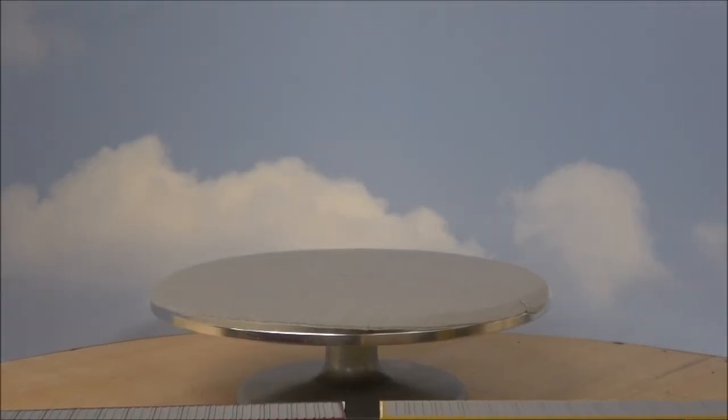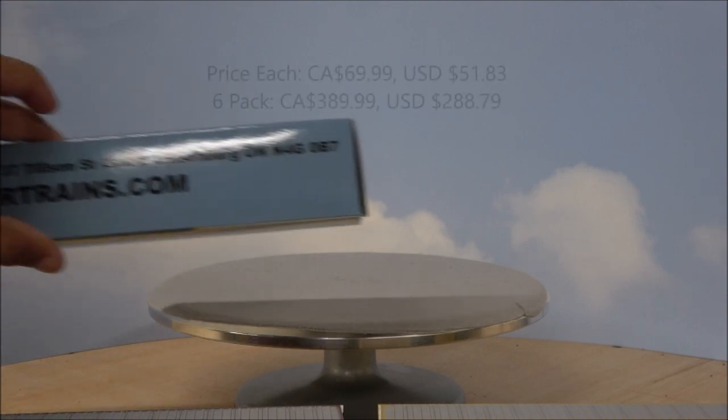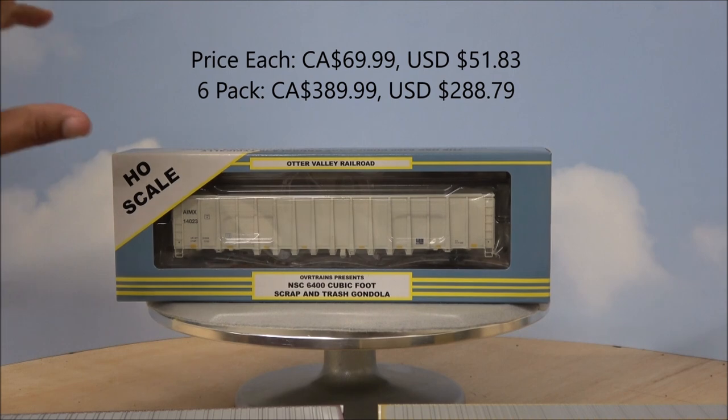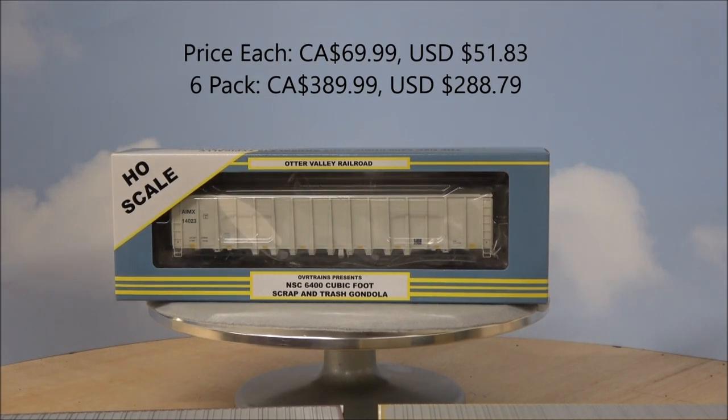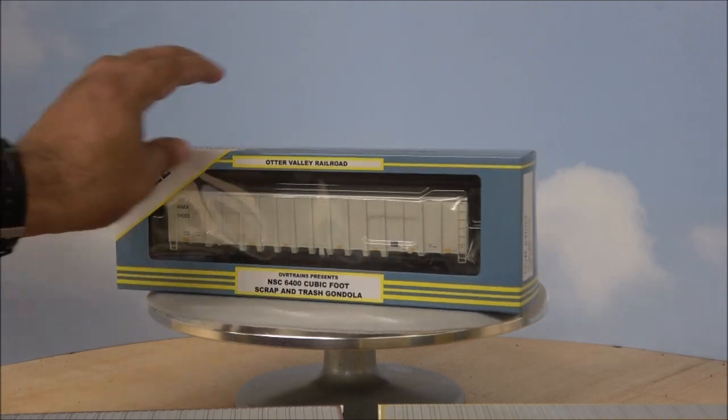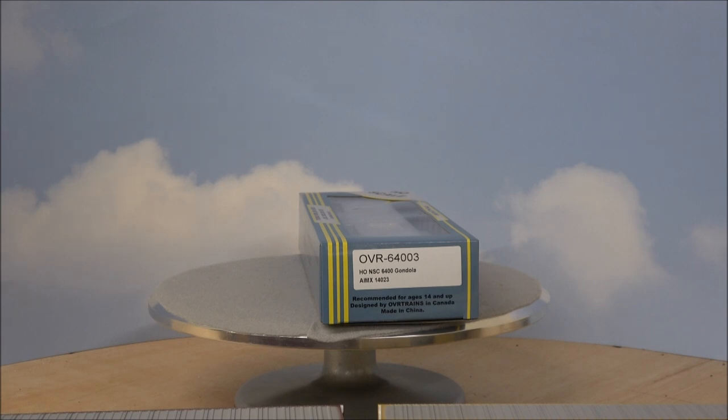Hey everybody, welcome back. Otter Valley Railroad, or ovrtrains.com, has their first freight car out. It's the NSC 6400 cubic foot scrap and trash gondola. We'll be taking a look at this in several different schemes, and I believe they're still available with another run coming. So we'll get this out of the box and see what you get next.